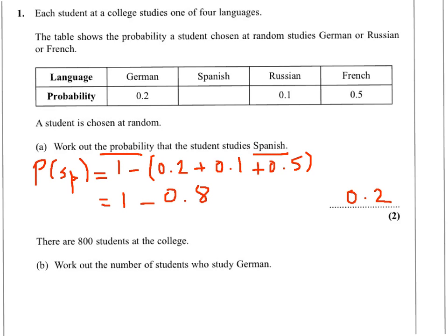For the next question we need to work out the number of students who study German. To work this out we use the probability of studying German, which is 0.2, times the number of students at the college, which is 800. The answer is 160 students who study German.